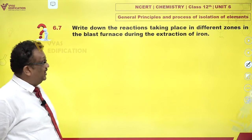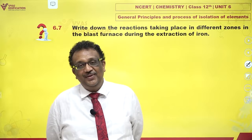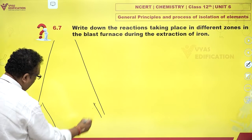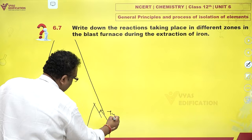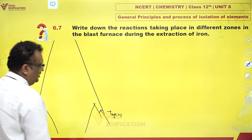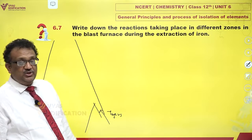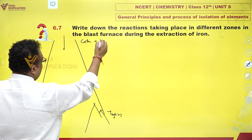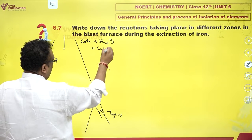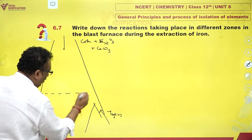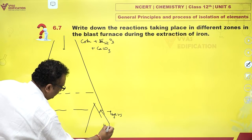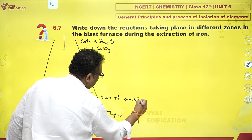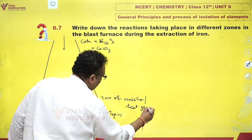The reactions which take place in different zones in blast furnace during extraction of iron. This is your blast furnace. These are tuyeres — they are pronounced as 'tweers'. When you throw coke plus hematite (Fe₂O₃) and limestone into the furnace, the coke meets hot air, giving you the zone of combustion or zone of heat generation.